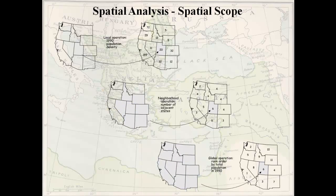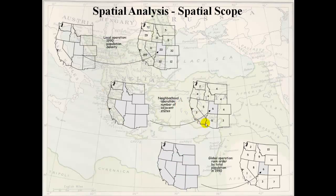The third type of scope is a global scope, where the answer for any single feature depends upon the values for all features in your dataset. For example, ranking Utah's total population in 1990 requires knowing the populations of all states, not just neighboring states or Utah alone. So local, neighborhood, and global are the three spatial scopes for vector data.